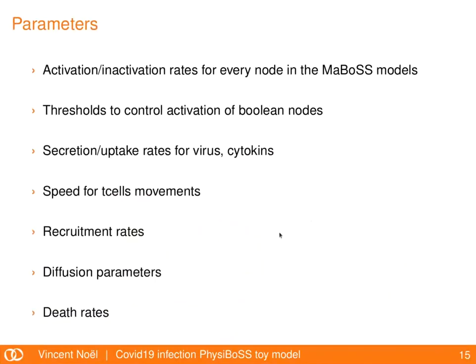This is just a toy model, and one of the problems is the large number of parameters. Since it's a MaBoSS model and not a pure Boolean model, you have activation and inactivation rates for every node. You have thresholds to activate nodes inside the Boolean network, secretion and consumption rates for virus and cytokines, cell movements for T cells, recruitment rates indicating how many T cells come in response to cytokines, diffusion parameters, and death rates for cells. I was able to get some parameters from the PhysiCell team, but we still need data.